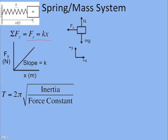And we can write out the period equation. Period is 2π square root of, well we know it's m over k for spring mass, but in general it's inertia over the force constant.